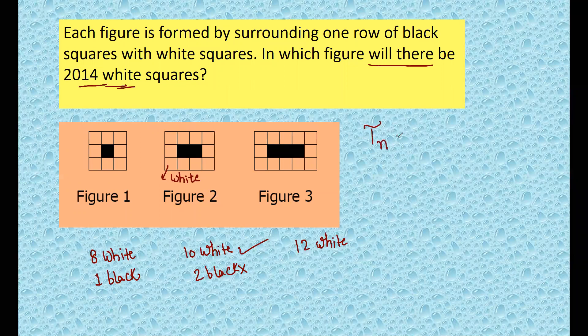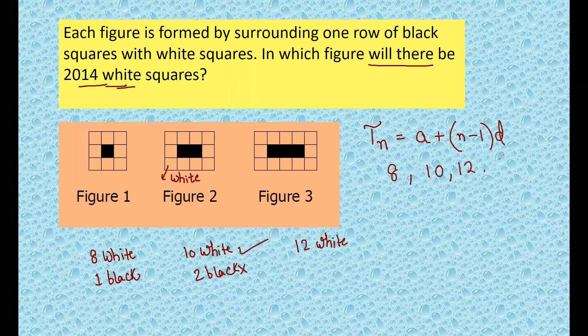So if you go by the AP formula - I'll tell why AP, because you can see the difference is constant: 8, 10, 12, 14. The common difference is 2. So t_n is 2014. First term is 8, you don't know which term, and d is 2.